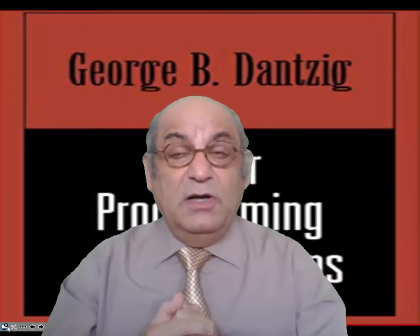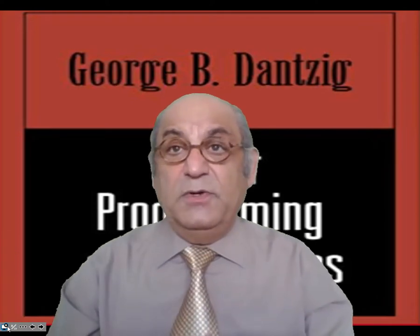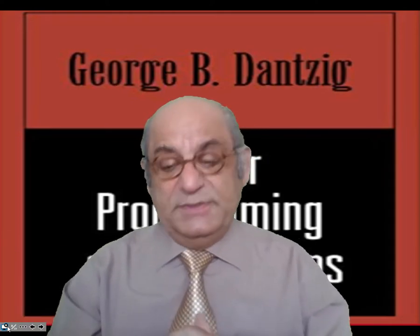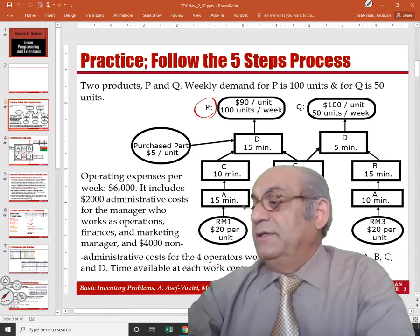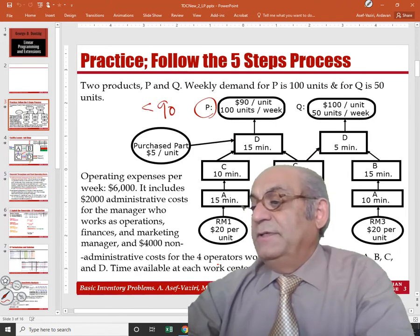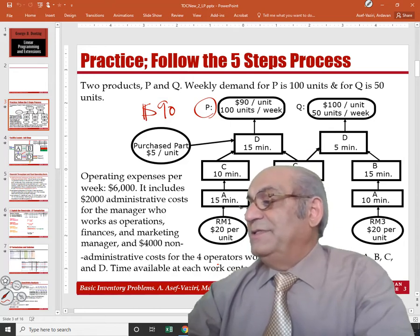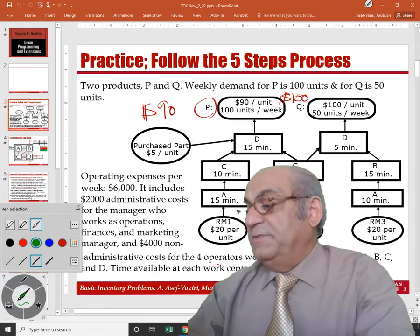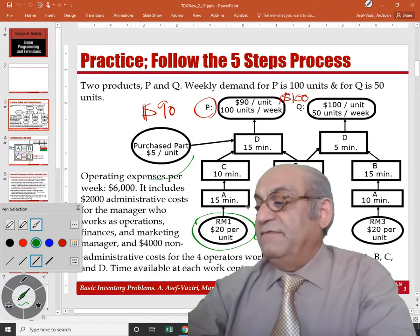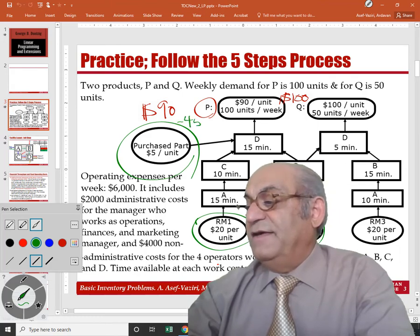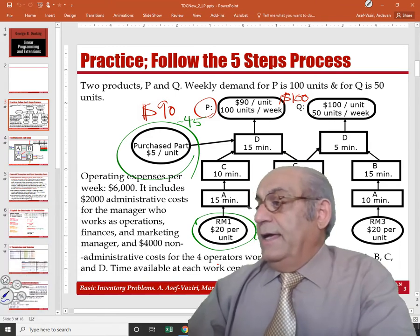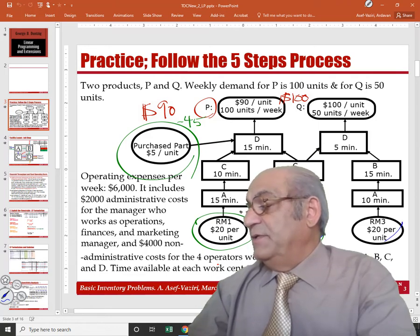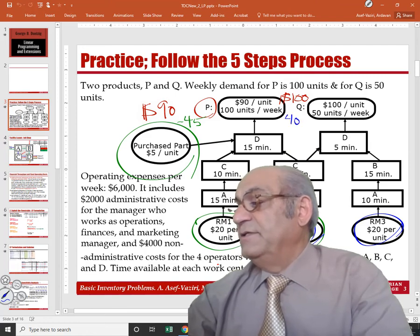Deal with variable cost first, then incorporate fixed cost afterward. We return to the same problem discussed before: we have two products. Product P, which we sell for $90, and product Q, which we sell for $100. The total variable cost of product P is $45, so we subtract $45 from P. We subtract $40 for Q.